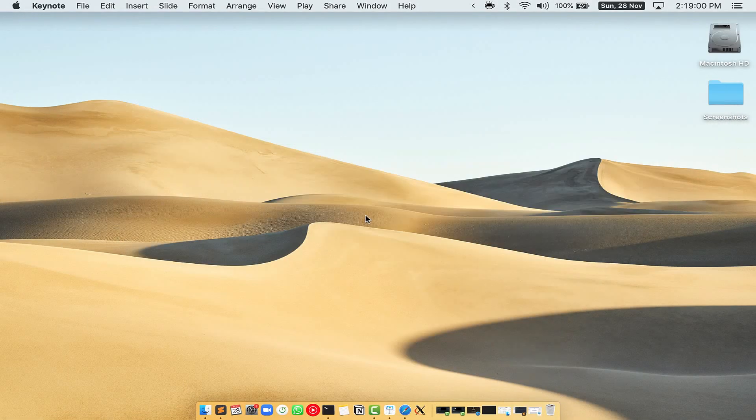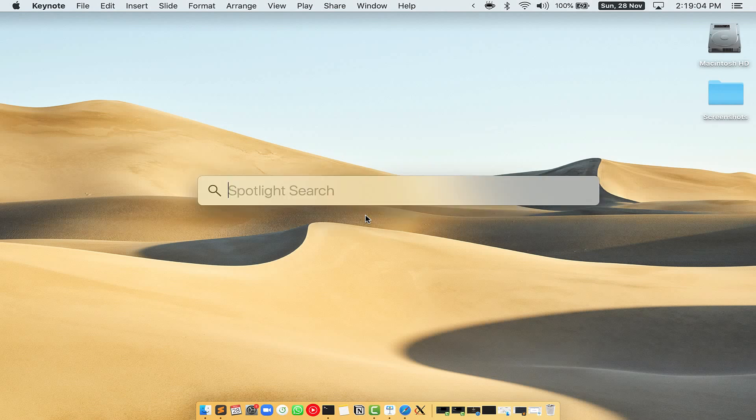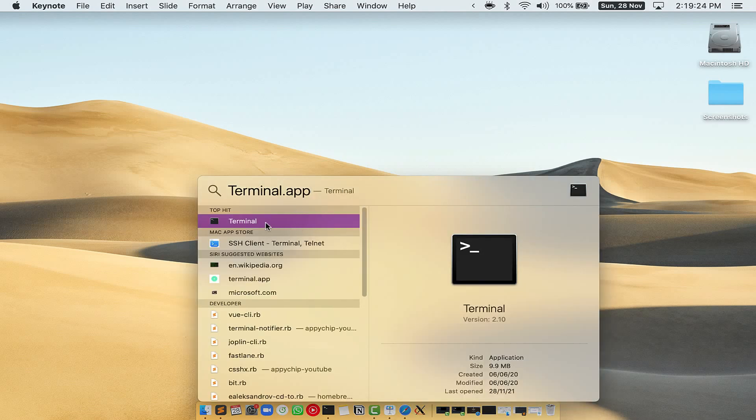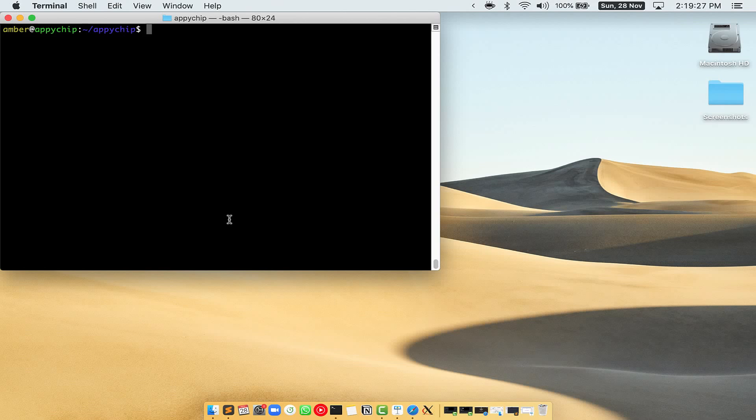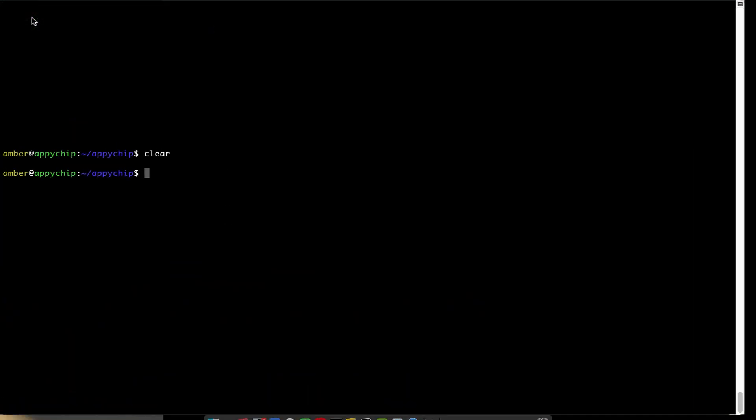First, you need to press Command and Space on your keyboard. This will open Spotlight search on your Mac, and then you have to type terminal.app. You will see this Terminal app. Simply double-click on it to open terminal. Let me maximize this terminal window.